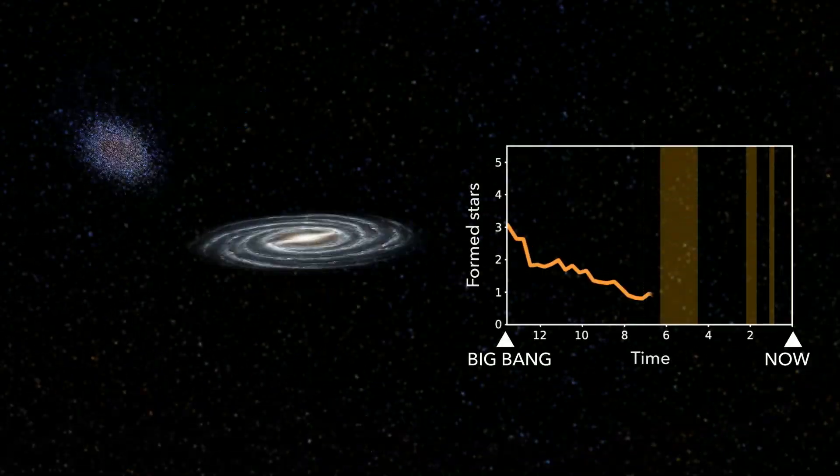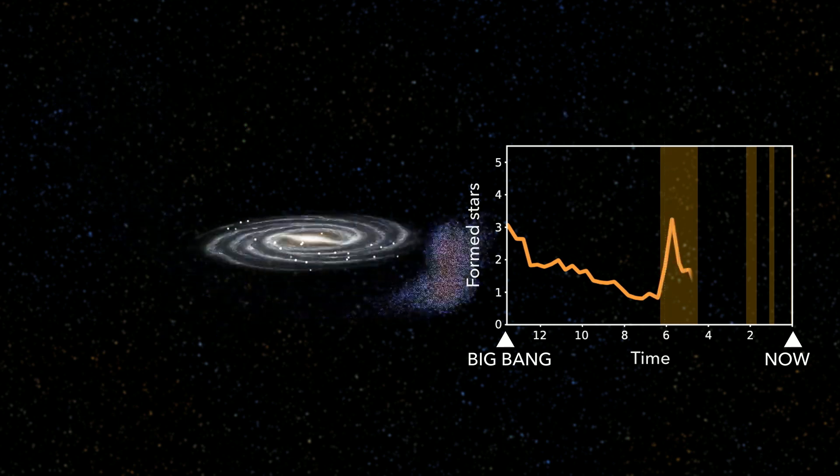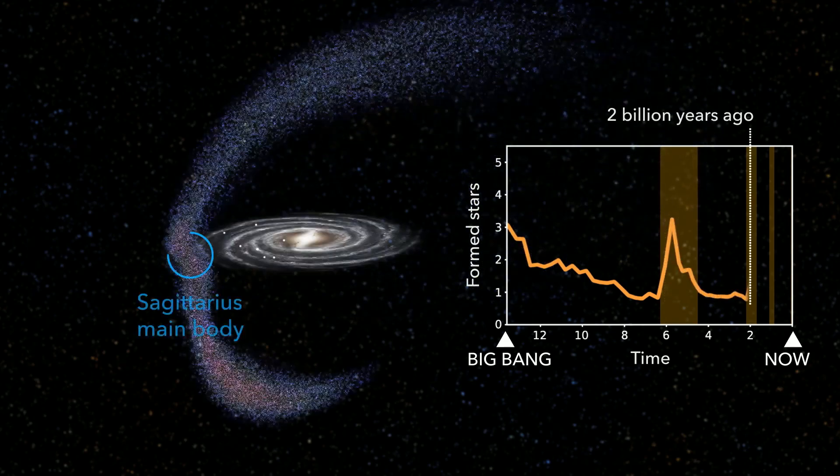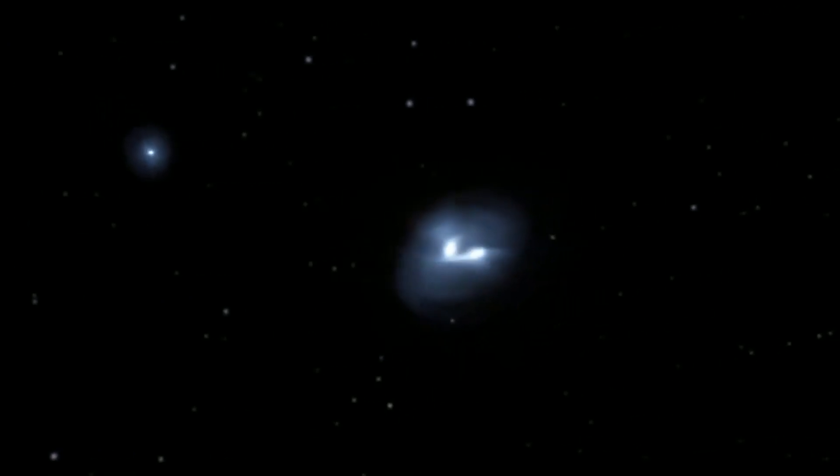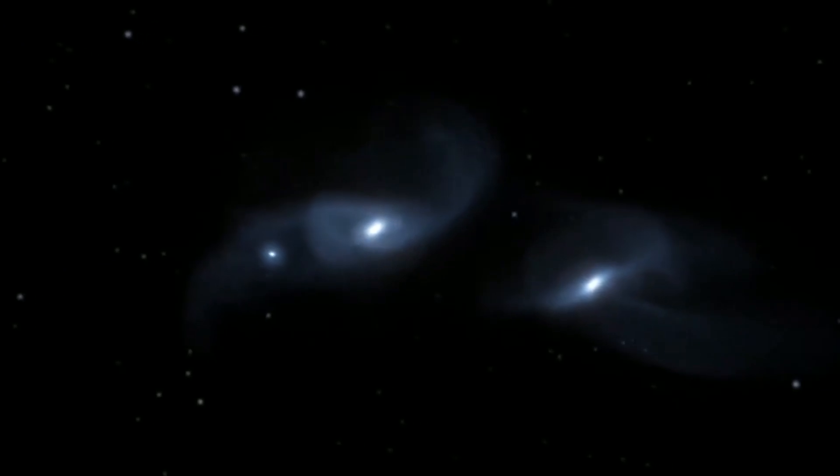As Sagittarius gets closer and closer to the Milky Way, it starts to feel the immense gravitational pull of its opponent. The forces are so strong that they begin to stretch Sagittarius out like a piece of taffy, forming long, thin streams of stars and gas that trail behind the dwarf galaxy like a cosmic comet.